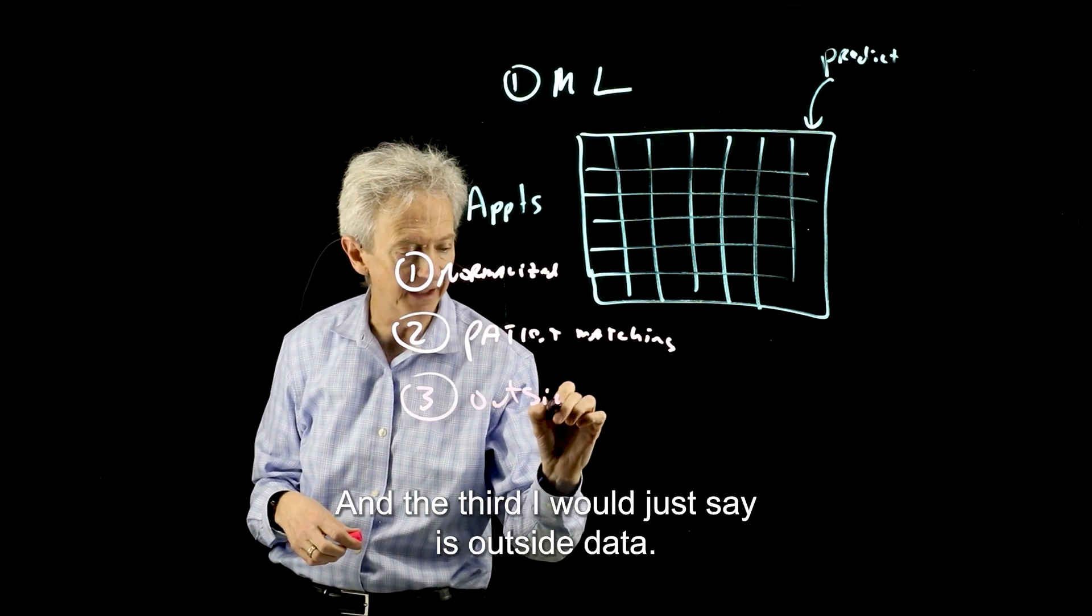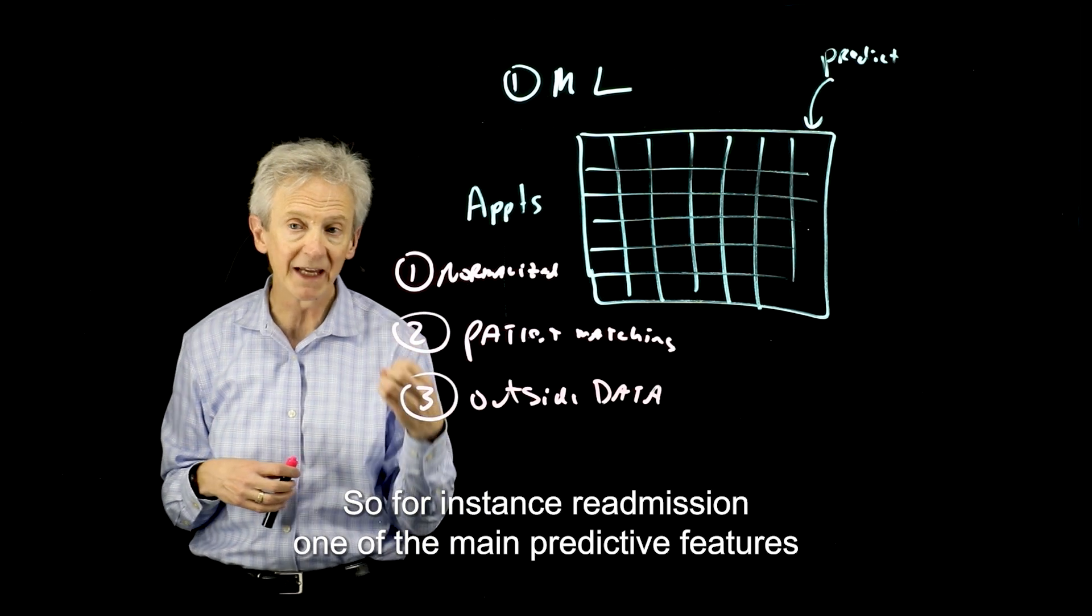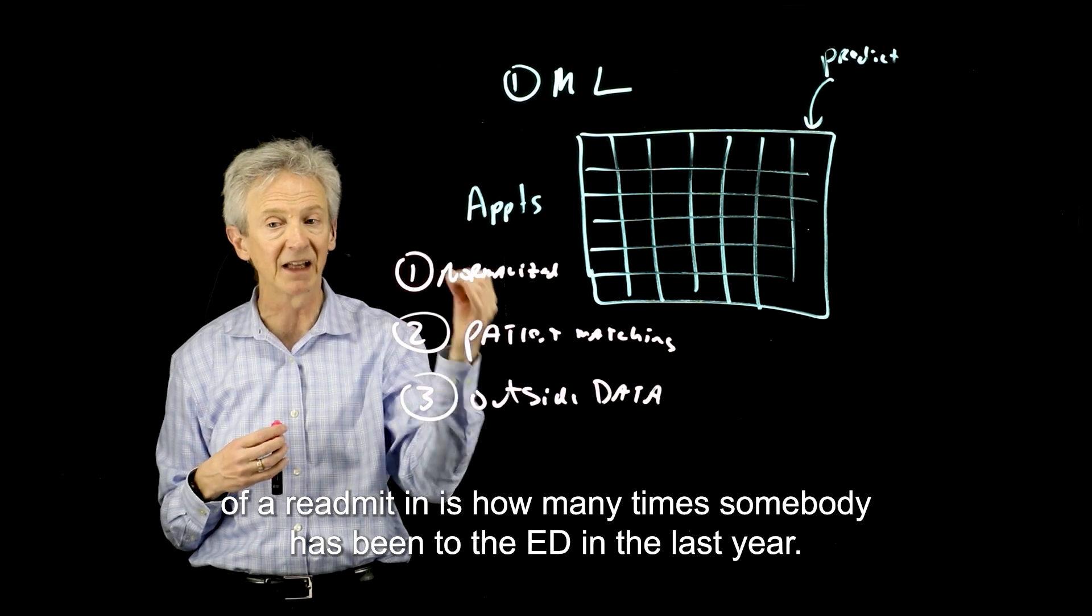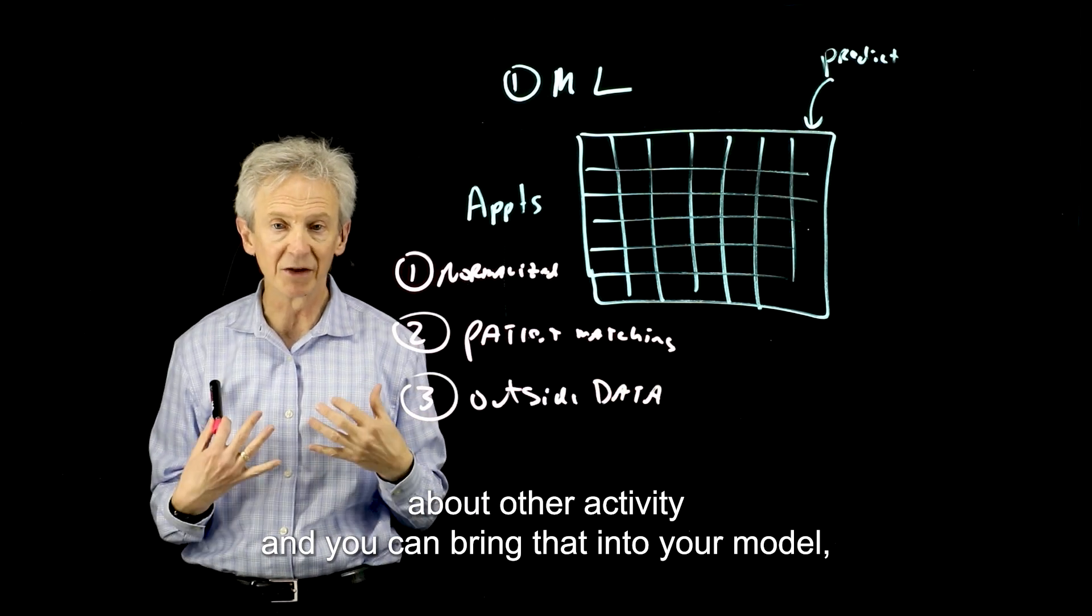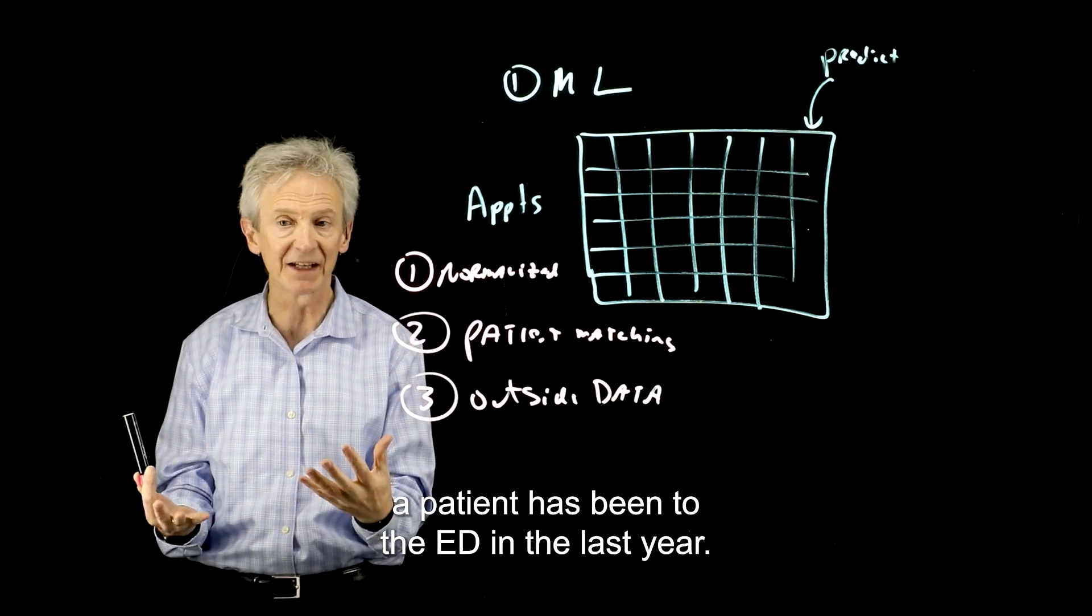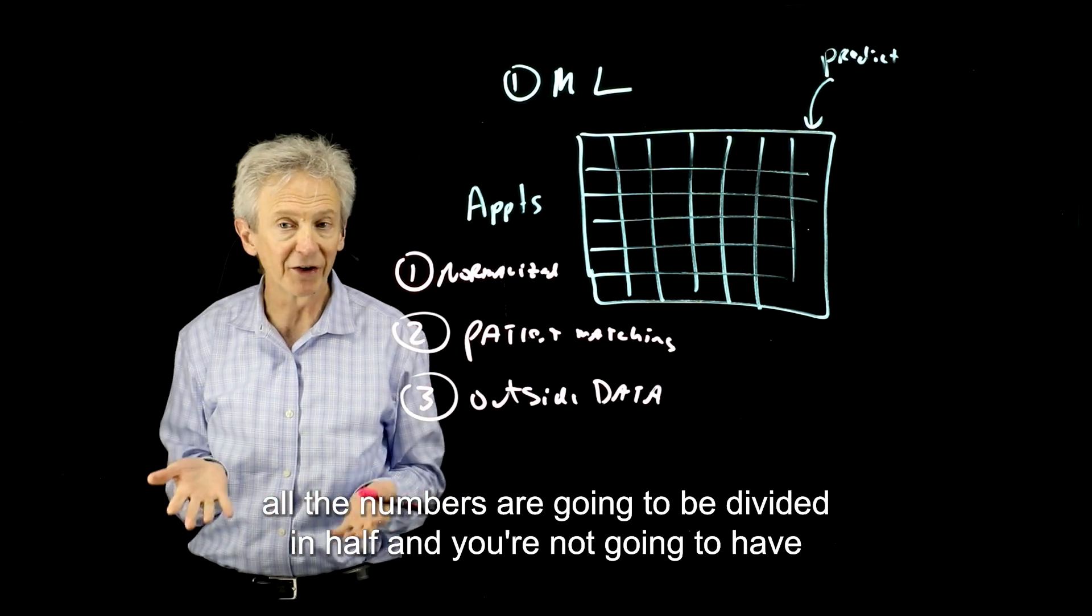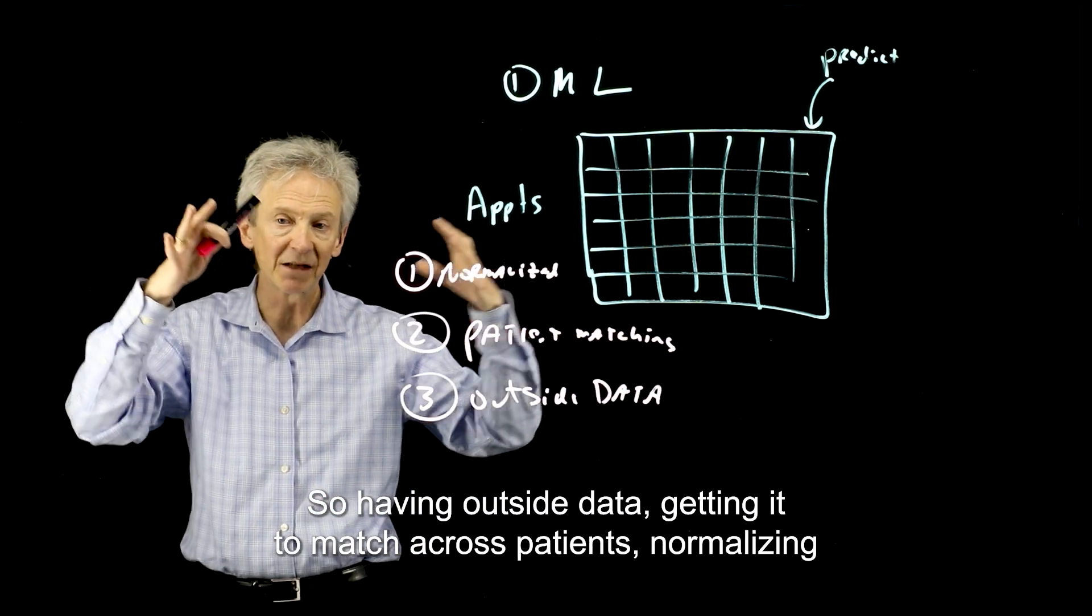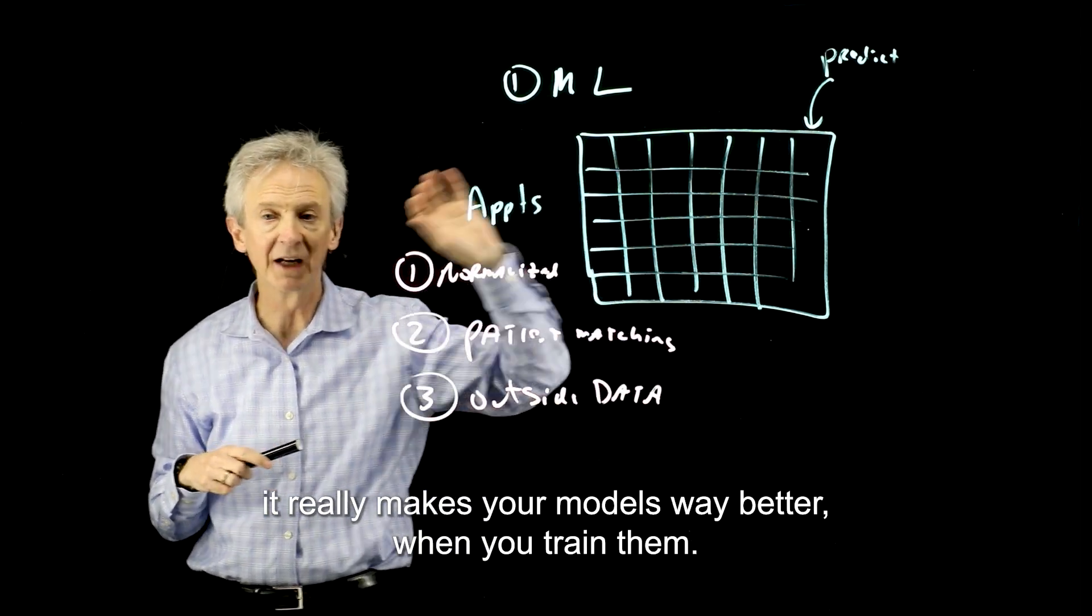And the third I would just say is outside data. Some models really thrive on knowing what happened outside. For instance, readmission: one of the main predictive features of a readmission is how many times somebody has been to the ED in the last year. If you know about other activity and you can bring that into your model, you're going to have an accurate read of the number of times a patient has been to the ED in the last year. If you only have half the data or half the experience in your community, all the numbers are going to be divided in half and you're not going to have that predictive quality. Having outside data, getting it to match across patients, normalizing it really makes your models way better when you train them.